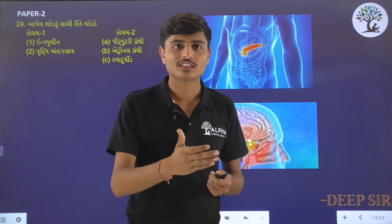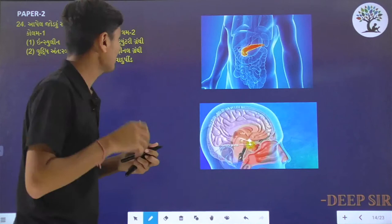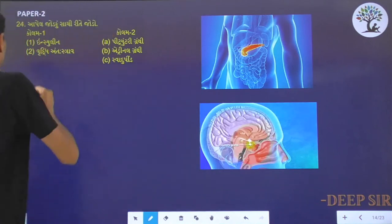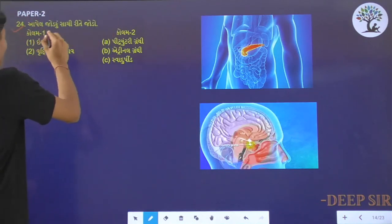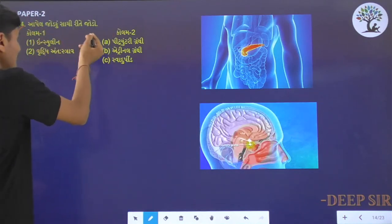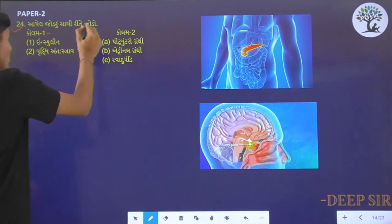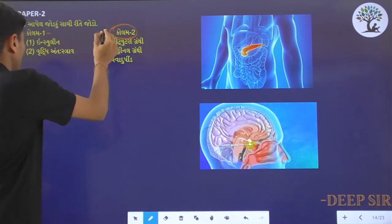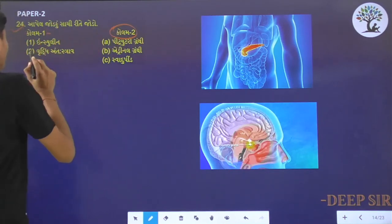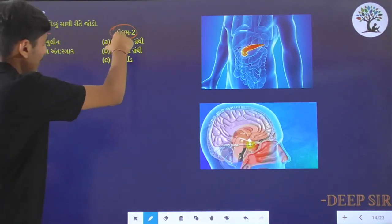This question is very important for you. Question number 24. You can add 1 to 1, you can add 1 to 2. The question is about insulin. There are many options.